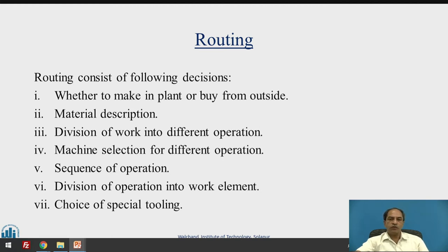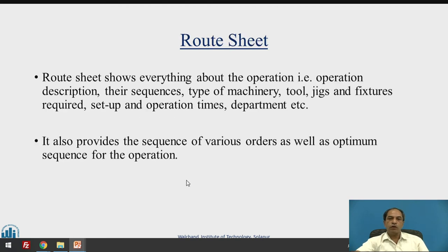Once we decide the material, work flow, and machines, the next important question is the sequence of operations — the process flow, generally called the machining process flow. The process flow is very important and cannot be changed arbitrarily. We also divide operations into smaller work elements, and if special tooling is required, we have to think of tooling as well. So routing consists of all these things.